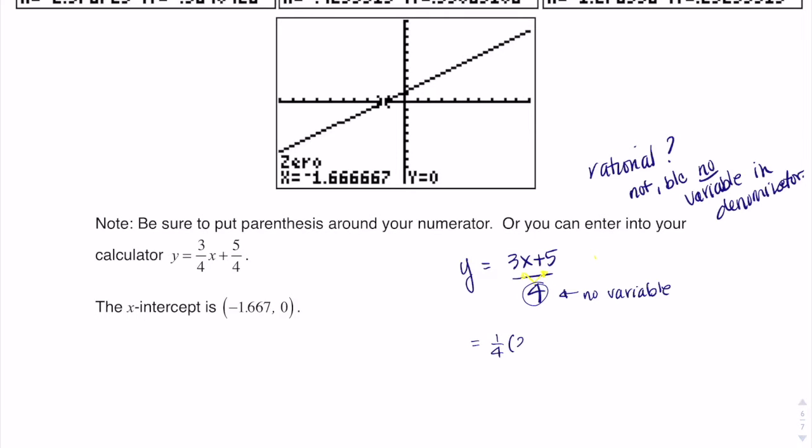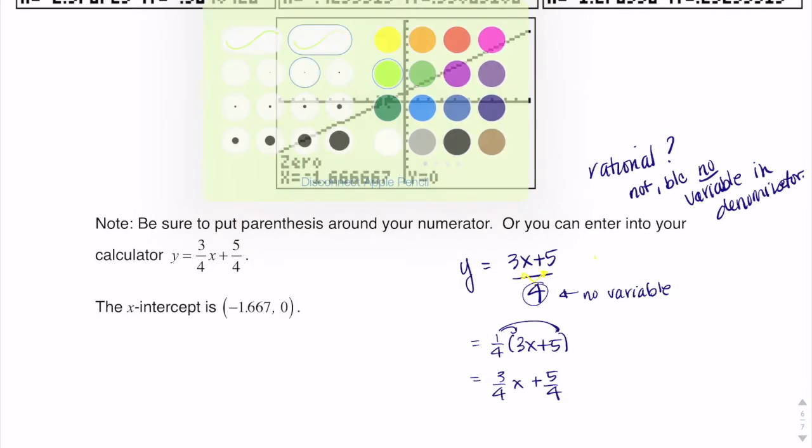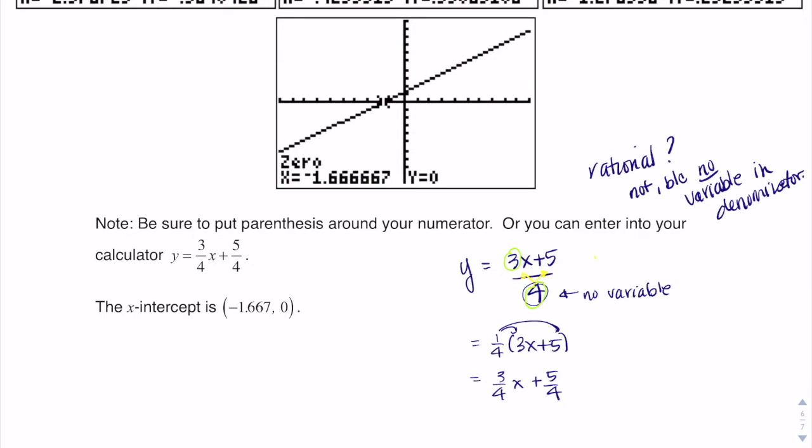So if I were to take 1/4 to 3x plus 5 and distribute that 1/4, I'm looking at 3/4 x plus 5/4, right? Or you can just think of it this way as 3/4 x plus 5/4. All right, but ultimately, this is a linear function, right? The slope is 3/4, and the y-intercept is the ordered pair (0, 5/4).